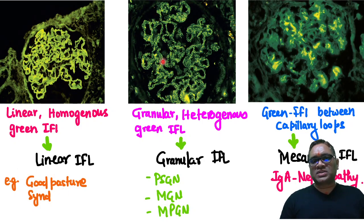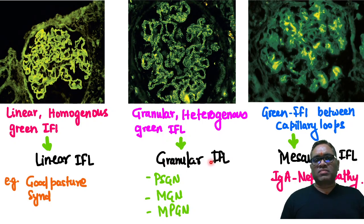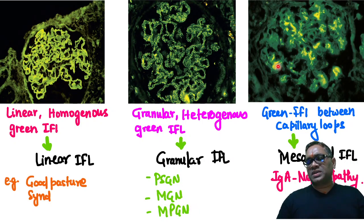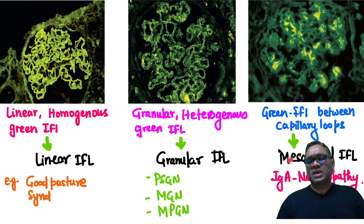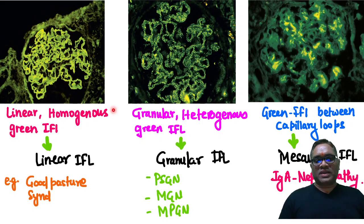You can see these are the heterogeneous green color — granular heterogeneous green immunofluorescence seen in PSGN, MGN, and MPGN. And here you can see in between the capillary lumen, there are yellow-green deposits, which are the green immunofluorescence between the capillary loops, and this will be seen in mesangial immunofluorescence in IgA nephropathy.